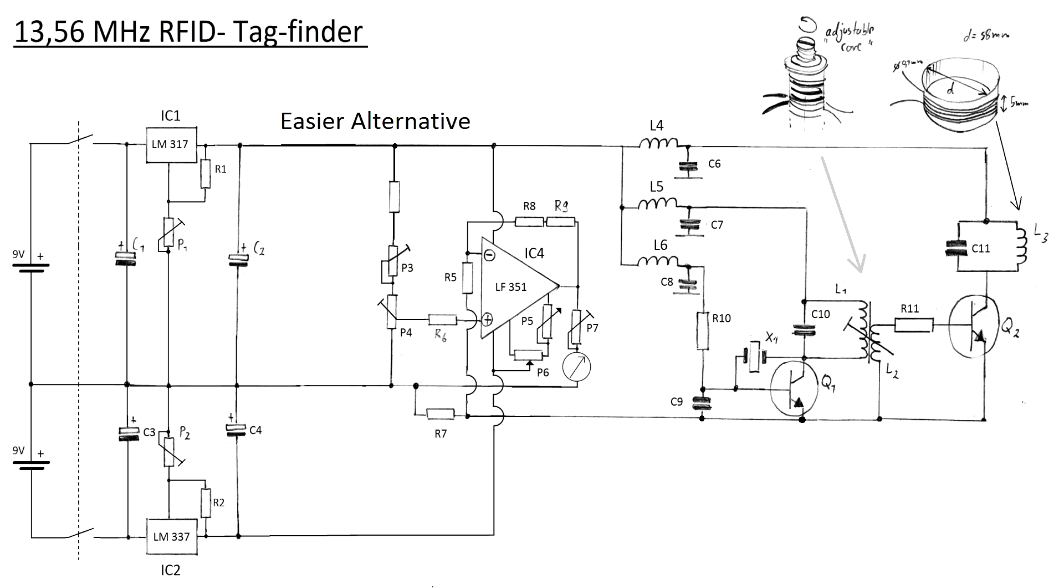What you see now is the complete circuit diagram of the detector. Instead of, or in addition to, the analog meter, some LEDs can be used as indicators.